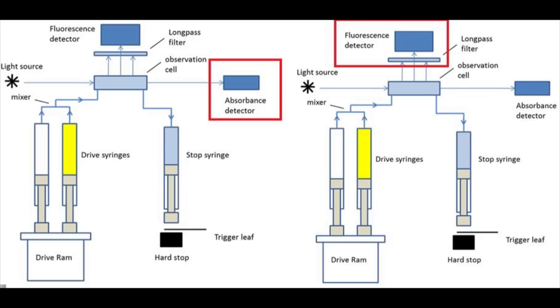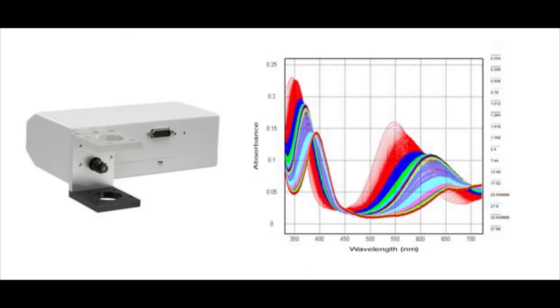To do this we most commonly use a xenon arc lamp light source. We pass this light through a monochromator that allows us to select the particular wavelengths of light that we are interested in. Alternatively, for absorbance measurements we have the option to measure all wavelengths simultaneously using a photodiode array detector.